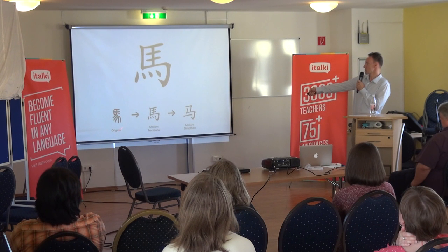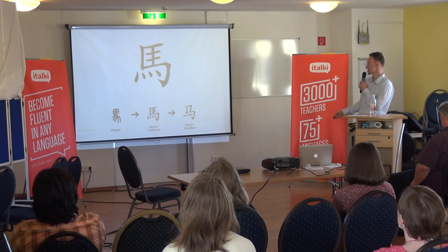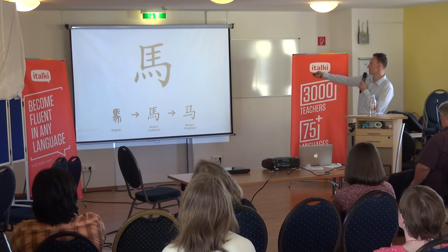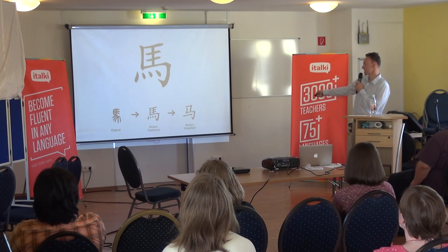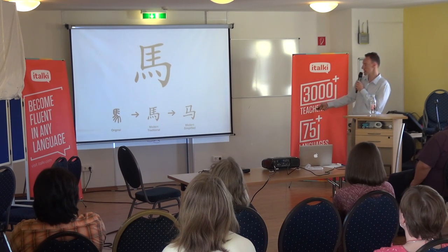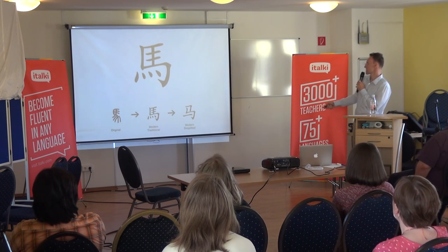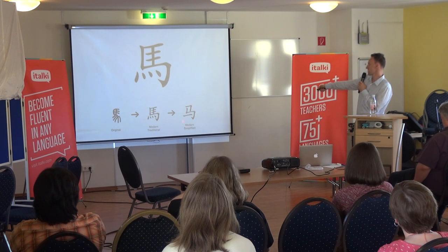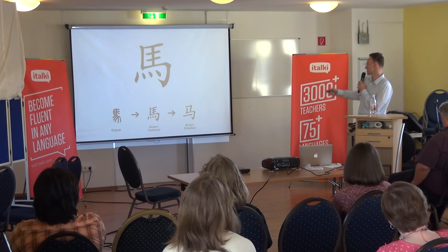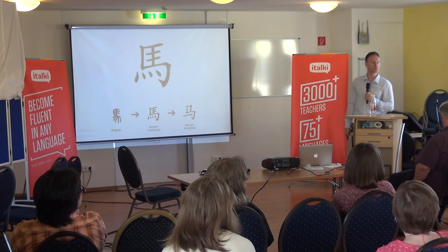A horse — the original one looks like a horse. This is the seal script version; previous versions existed, but the modern one is based on that. Then we have the modern traditional and simplified versions. What's the difference? In this case it's a simplification: the four dots were replaced by one stroke, and this element was replaced by just a bent stroke. This is the standardization of strokes.